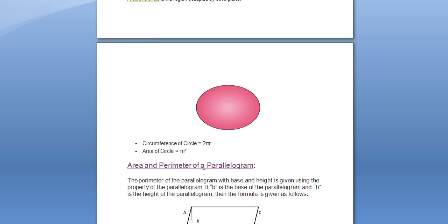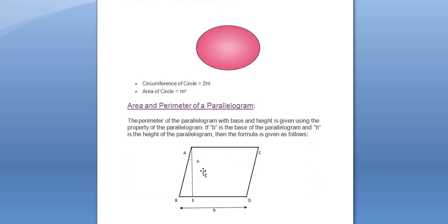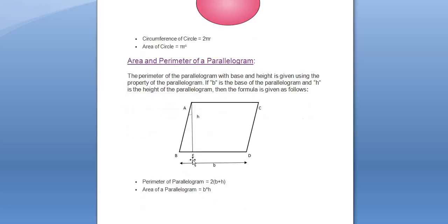Moving on towards the parallelogram. In a parallelogram, as we can see, B is the base of the parallelogram and H is the height. Perimeter is given by 2 into B into H, where B and H are the base and the height of the parallelogram, and area is given by base into height.